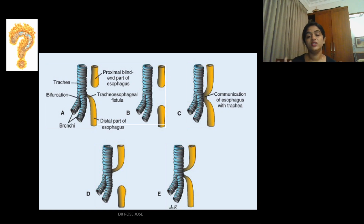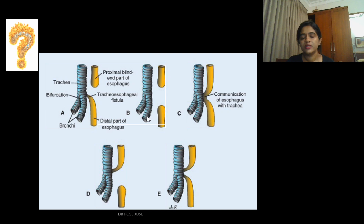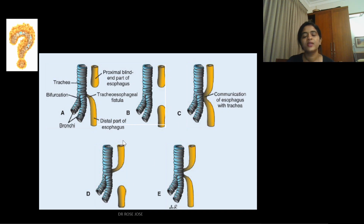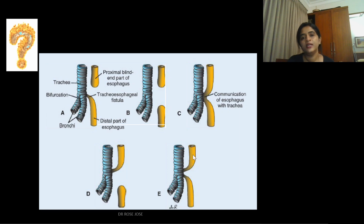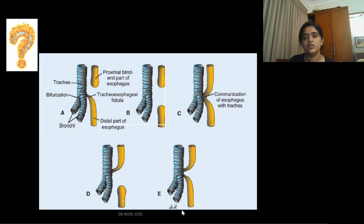This diagram shows the different types of tracheoesophageal fistula. In the first type, the proximal end of the esophagus is blind while the distal end communicates with the trachea. In another type, both proximal and distal ends of the esophagus are completely blind with no fistula or communication. Another type shows a patent esophagus communicating with the trachea. One type has the proximal end communicating with the trachea while the distal end is blind. In another, both proximal and distal parts make separate communications with no esophageal continuity.